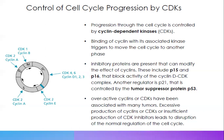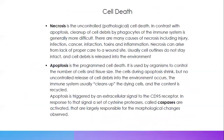Another regulator is P21, which is controlled by the tumor suppressor protein P53. Sometimes cancer is produced when this tumor suppressor protein is absent or not produced, allowing tumor formation. Overactive cyclins or CDKs have been associated with many tumors. Excessive production of cyclins or CDKs, or insufficient production of CDK inhibitors, leads to disruption of normal regulation of the cell cycle. When inhibitors are not present or CDKs are overactive or excessively produced, there is no normal cell cycle and cancer is produced.